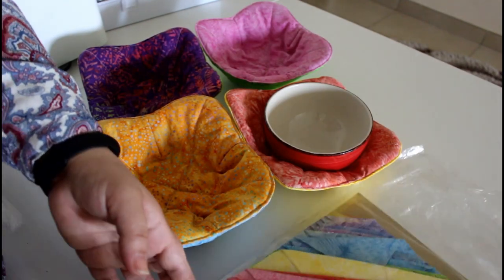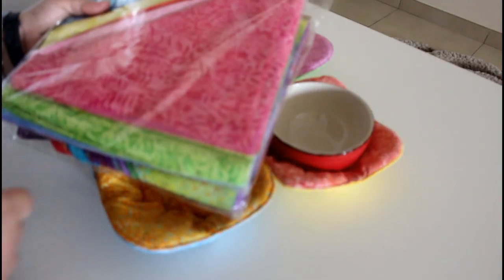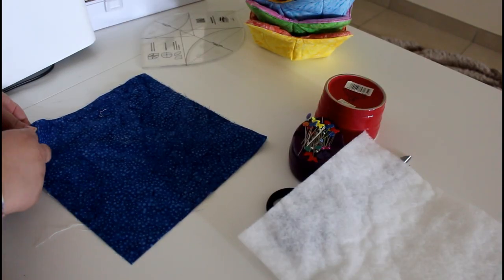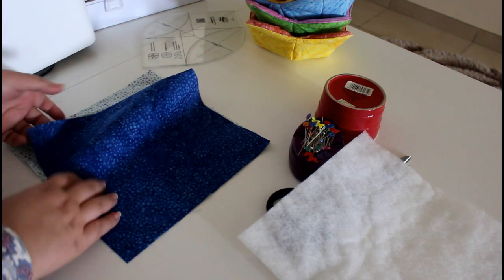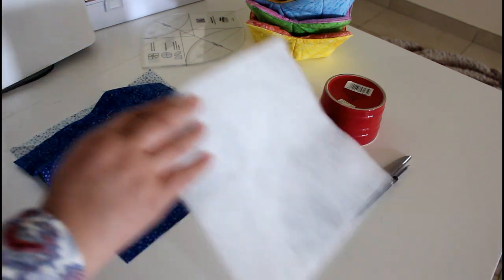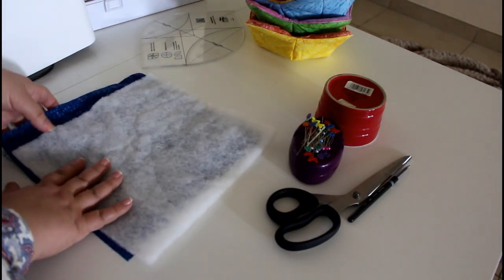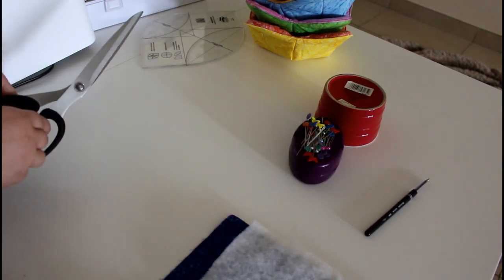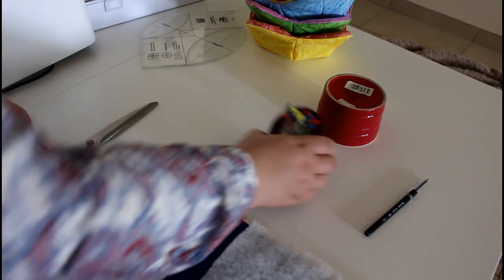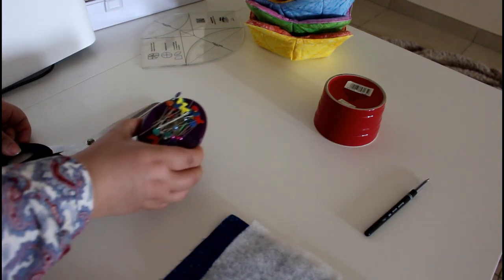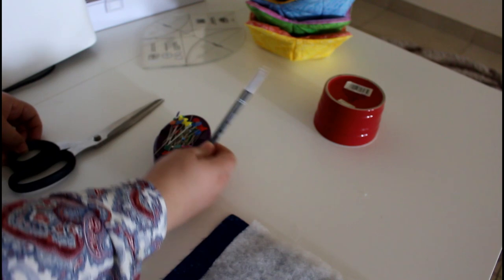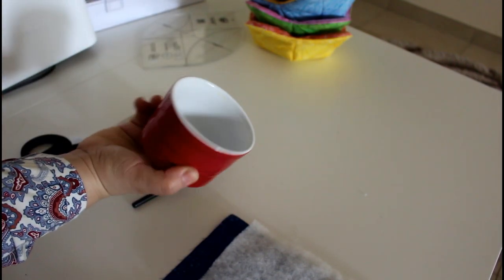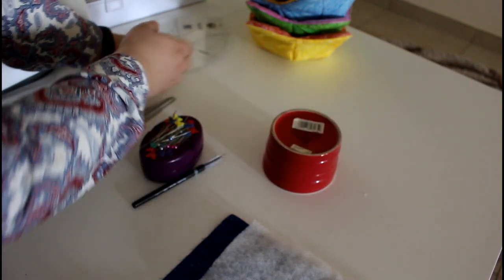You will need two pieces of ten-inch square fabric for each bowl—two pieces for this part and two matching pieces of quilt batting. You will need your scissors or rotary cutter, some pins, a marking tool of your choice, and a rounding tool. You can use a bowl like this one or if you have a rounding ruler.